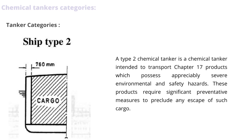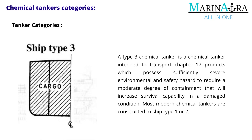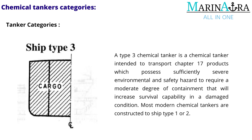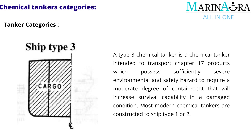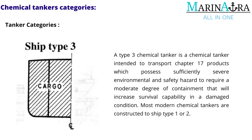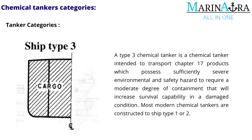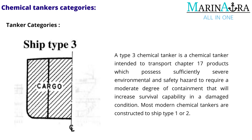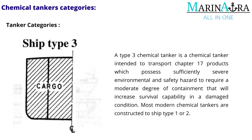A type 3 chemical tanker is intended to transport Chapter 17 products which possess sufficiently severe environmental and safety hazard to require a moderate degree of containment that will increase survival capability in a damaged condition. Most modern chemical tankers are constructed to ship type 1 or 2.